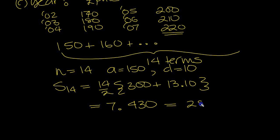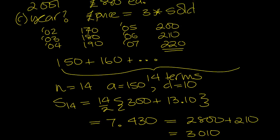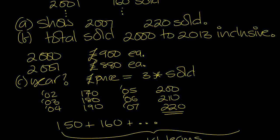And 7 times 30 is 210. So that's 3,010 computers sold over those 14 years, 2000 to 2013 inclusive.